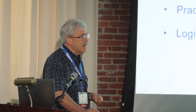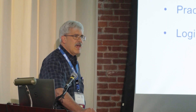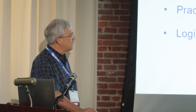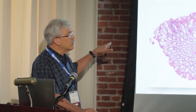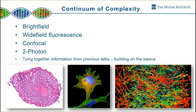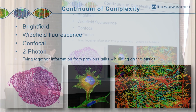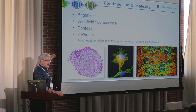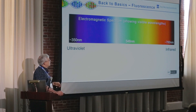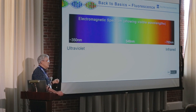So that's what we're going to go through today. When talking about two-photon, we have to go back to some basics and run through a continuum. In microscopes, there's a continuum of complexity starting with your basic brightfield instrument from high school biology class, working its way up through fluorescence, confocal, and two-photon. With two-photon especially, you have to understand fluorescence, so here's a little primer.